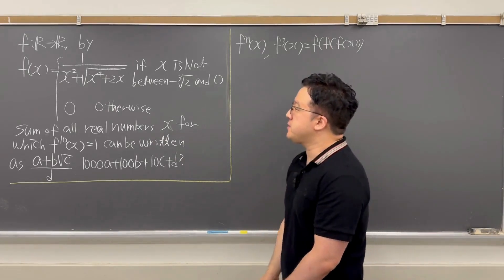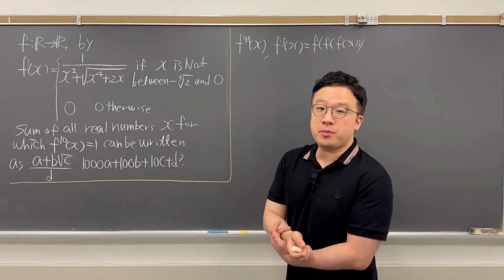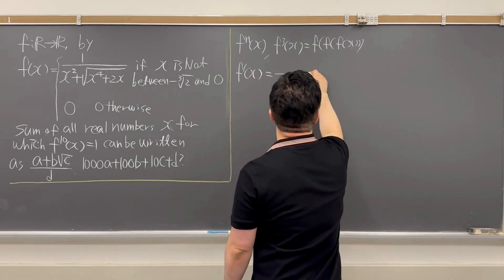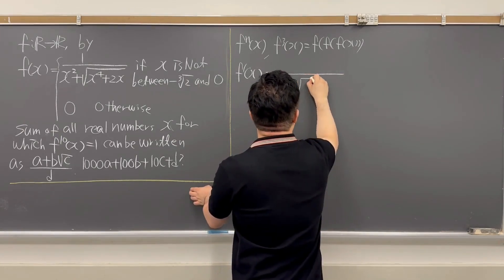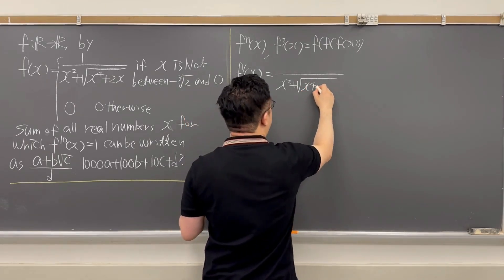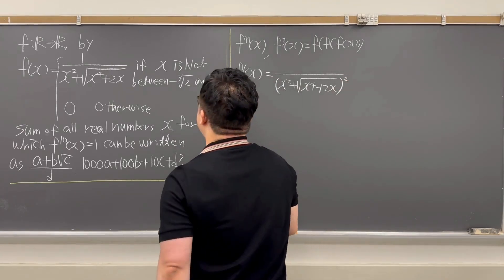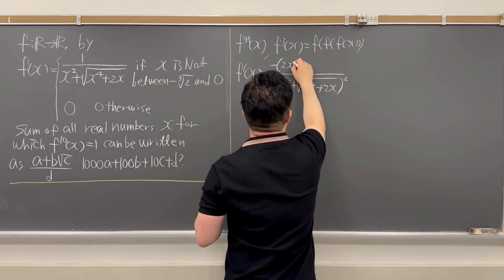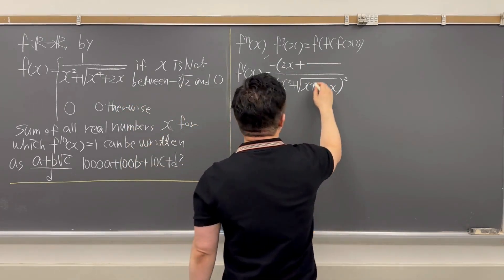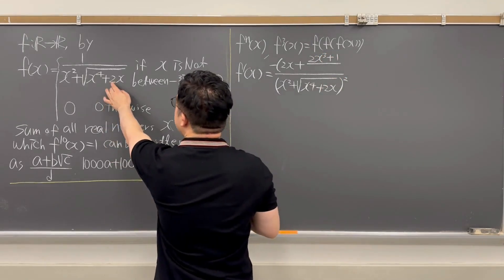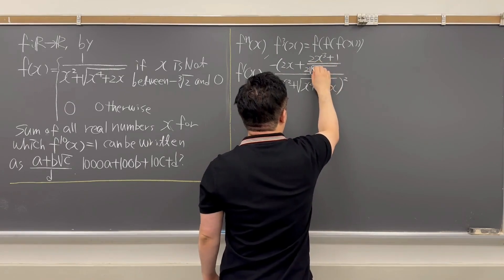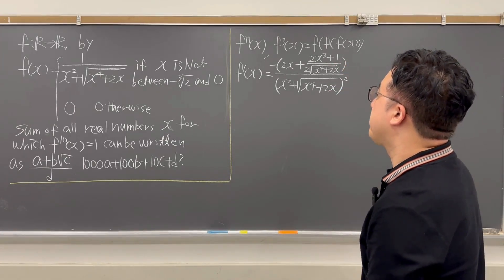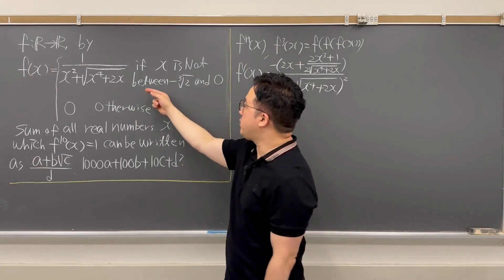What I'm going to do first is get the derivative of f(x) when x is not between negative cube root of 2 and 0. So f′(x) has denominator equal to (x² + √(x⁴ + 2x))², and the numerator is negative times (2x + (2x³ + 1) / (2√(x⁴ + 2x))).